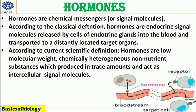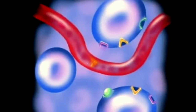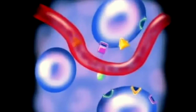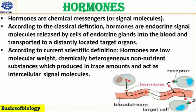Hormones are chemical messengers, or signal molecules — we can also say hormones are information molecules secreted by endocrine cells. There are two definitions of hormones. The classical definition states that hormones are endocrine signal molecules released by cells of endocrine glands into the blood and transported to a distantly located target organ.